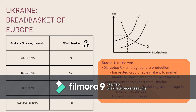Ukraine produced 10% of wheat, 13% of barley, 15% of corn, and 50% of sunflower oil in the world. However, the war seriously disrupted Ukraine's agricultural production, as harvested crops were unable to make it to market and farmers were unable to start planting for the next harvest. This caused a 20 million ton Ukrainian grain shortage in the market, resulting in increasing food prices.